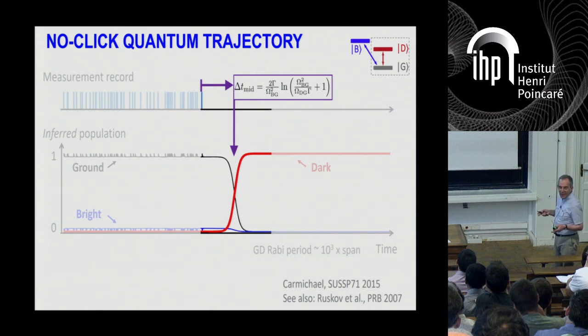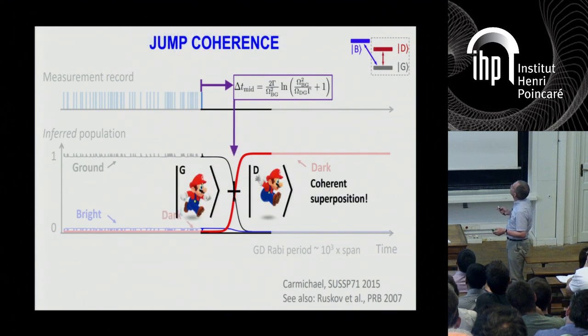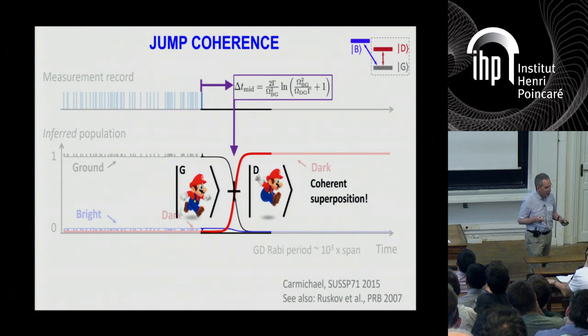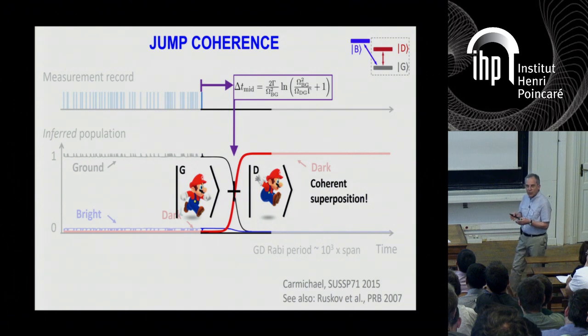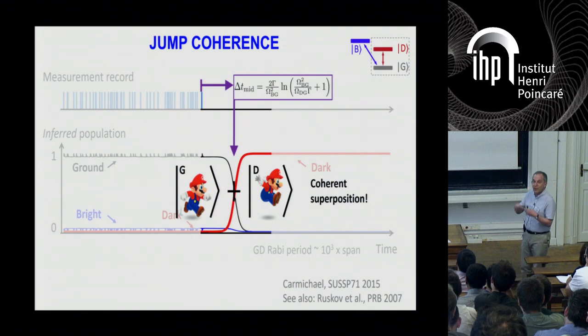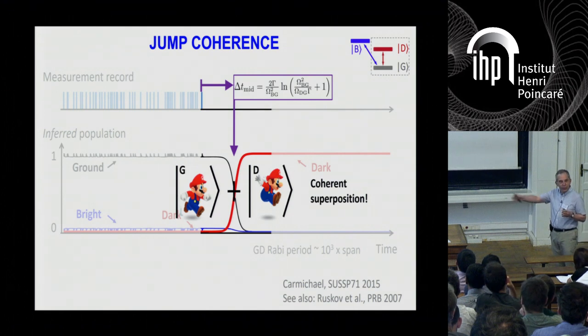And then, there is the third prediction, which is absolutely unbelievable at first, which is that, in fact, this middle point is a coherent state, a coherent superposition between G and D. So this sounds very paradoxical at first because this is not an isolated system. This is a system under constant monitoring. It's coupled to an environment and it is measured extremely fast by the environment. Yet, there is an island of determinism and coherence in this long series of noise.